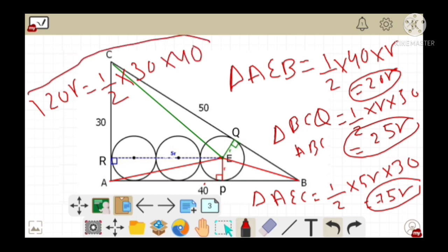By solving this expression, we get R equals 5. Hence, the radius of each circle inscribed inside the right-angled triangle is 5 units.